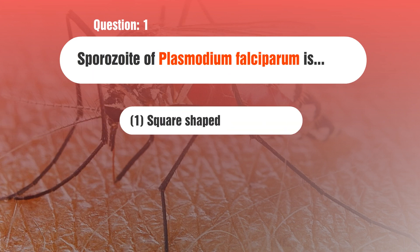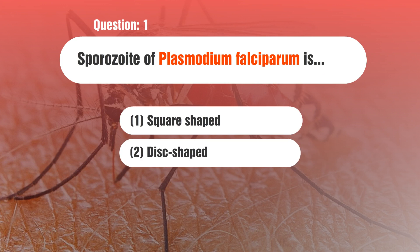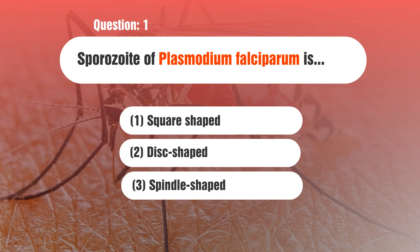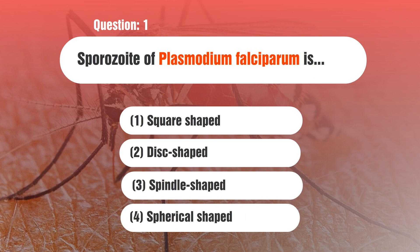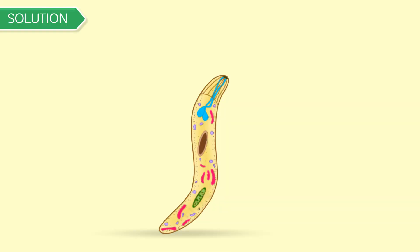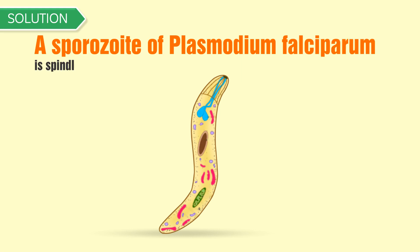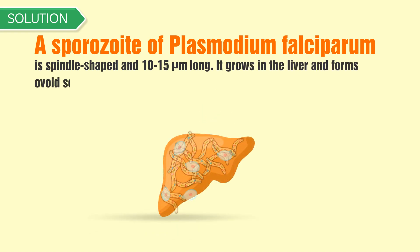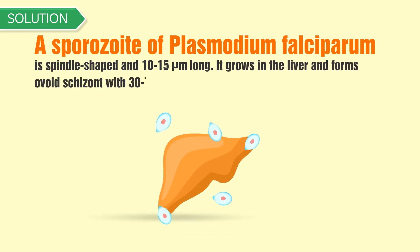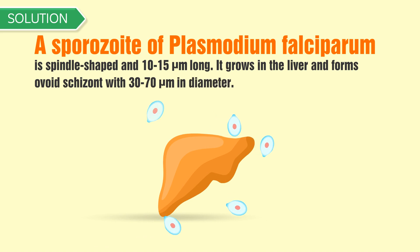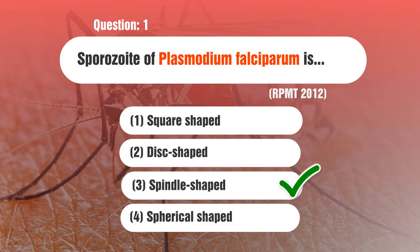Let's solve a few questions based on this topic. Question 1: The sporozoite of Plasmodium falciparum is — 1) square-shaped, 2) disc-shaped, 3) spindle-shaped, 4) spherical-shaped. This question was asked in Rajasthan PMT 2012. Solution: A sporozoite of Plasmodium falciparum is spindle-shaped and 10 to 15 micrometers long; it grows in the liver and forms an ovoid schizont with 30 to 70 micrometers in diameter. Hence option 3 is the correct answer.